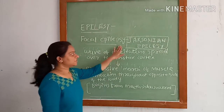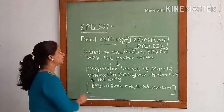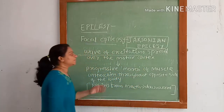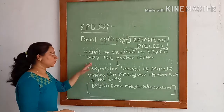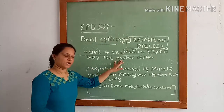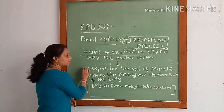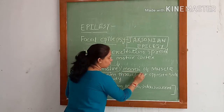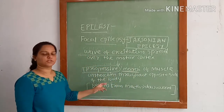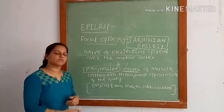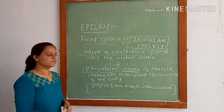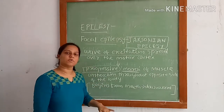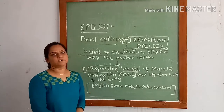In Jacksonian epilepsy, there will be a wave of excitation which spreads over the motor cortex, causing a progressive march of muscle contraction throughout the opposite side of the body, starting from the mouth and going downward towards the legs.